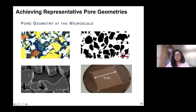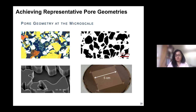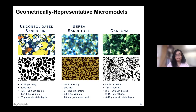This is a fantastic approach because you can develop any type of geometry you're interested in. A number of different geometries have been developed: an unconsolidated sandstone representative of a deep ocean sediment, a Berea sandstone more appropriate for CO2 storage or hydrocarbon recovery, or a carbonate geometry. Really any pore geometry can be transferred into a substrate to visualize fluid flow.